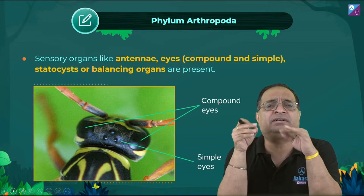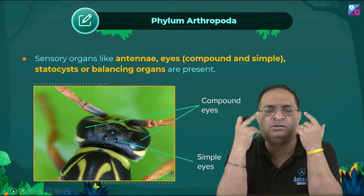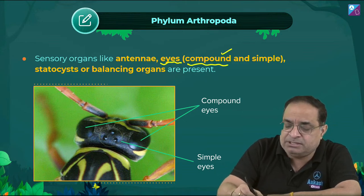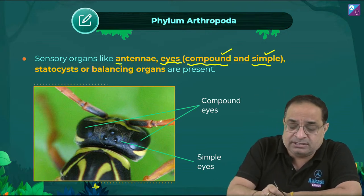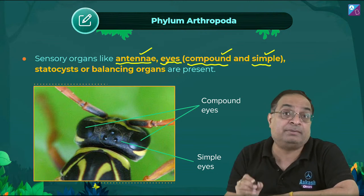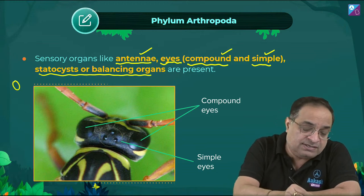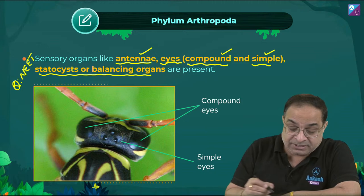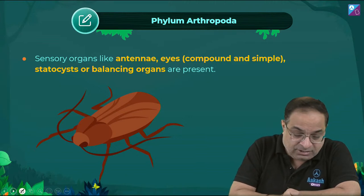In insects, excretion is by Malpighian tubules. Sensory organs include simple eyes, compound eyes, and antennae — which help check surrounding environmental conditions. Statocysts are the balancing organs, which is important — this can be framed as a question. Both simple and compound eyes are present.